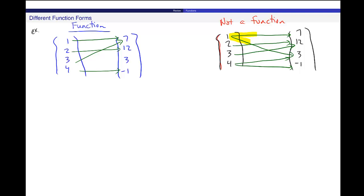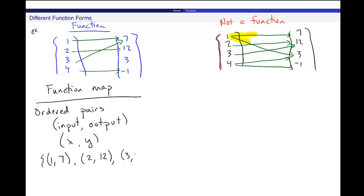These two are examples or this one over here is example of a function map. Another way to write this is as a list of ordered pairs. Inputs and outputs. So, it's the input, comma, the output. Just like we would see x, y. So, this one that I just gave you would look something like this. 1, comma, 7 in an ordered pair. 2 going to 12. 3 also has output 7. And 4 has output negative 1.